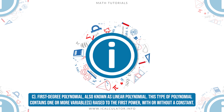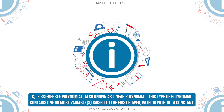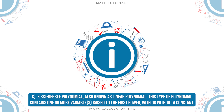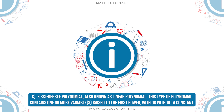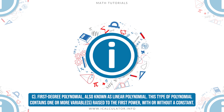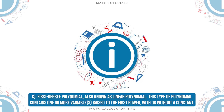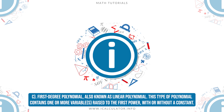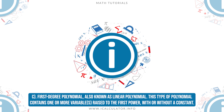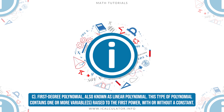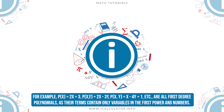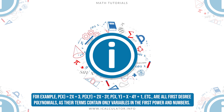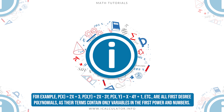C. First-degree polynomial, also known as linear polynomial. This type of polynomial contains one or more variables raised to the first power, with or without a constant. For example, p(x) = 2x + 3,